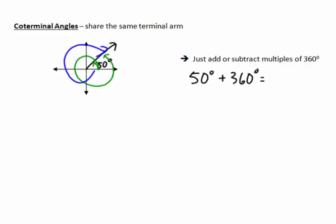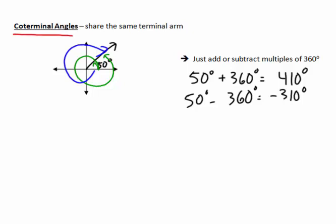If we added 360, we would say this is an angle of 410 degrees. If we took our original angle and subtracted 360, that tells us we're at negative 310 degrees — just adding and subtracting multiples of 360. We could go around that circle many, many times; we're not limited to one. When you get back to that terminal arm, that's what's considered a coterminal angle — sharing the same terminal arm.